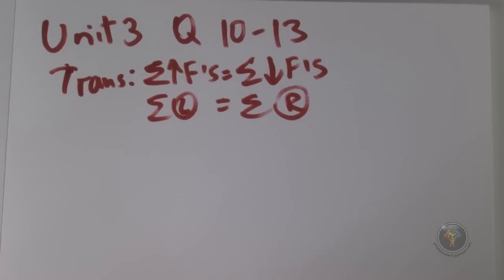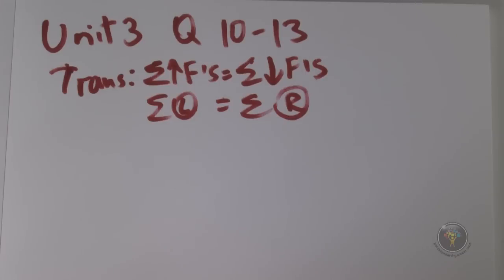This is a consequence of Newton's second law: the sum of forces equals mass times acceleration. If there is a net force on anything, there must be acceleration — not just movement or speed, but acceleration. Any net force on an object produces acceleration.